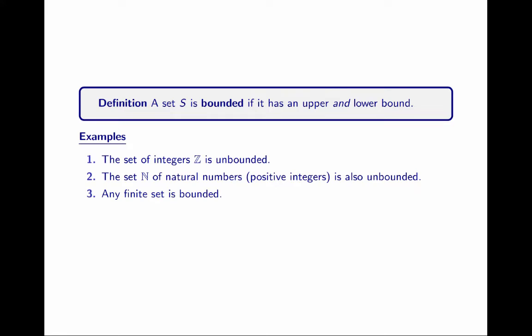Any finite set is bounded. Because it's bounded, it has both a lower and an upper bound. Because it has an upper bound, it has a least upper bound. Of course, the least upper bound would just be the largest number in the finite set.